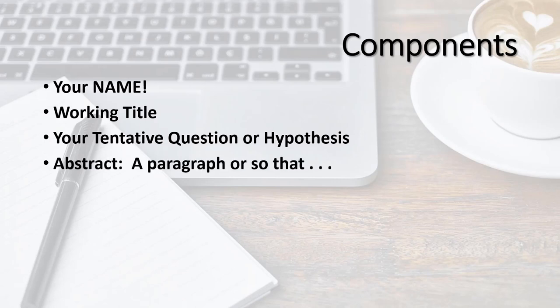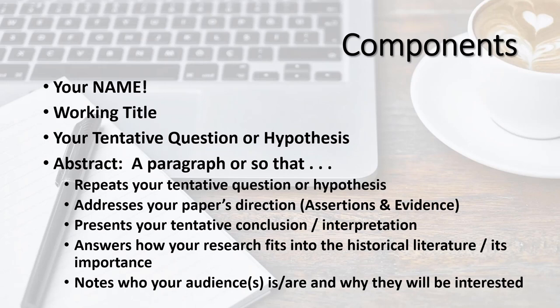After that, you should supply an abstract. An abstract is a paragraph or two — a total of 150 to maybe 250 words — that does a number of things. It repeats your question or hypothesis; the abstract should be free-standing and should not rely on fields you've already completed to make sense. You don't have to restate your question verbatim, but you do have to include it somehow. Then you succinctly describe the direction your paper will take — that is, your assertions and evidence. This is not an elaboration of your argument, but an overview and a summary of it. In addition, you should present your tentative conclusions. Your abstract should also address how your research fits into the historic literature of your topic, which it can do in a phrase, clause, or sentence or two. It addresses your research's importance to your audience, and in doing so identifies your audience and why they might be interested in what you have to say.